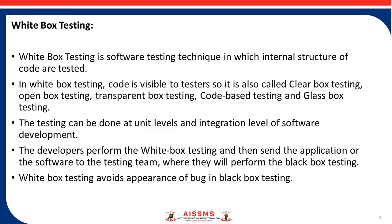Testing can be done at the unit and integration levels of software development. The developer performs white box testing and then sends the application or software to the testing team, where they perform black box testing. White box testing avoids the appearance of bugs in black box testing. There are three types of white box testing at the unit level: statement coverage, branch coverage, and decision coverage.